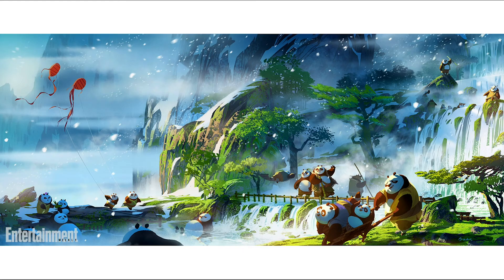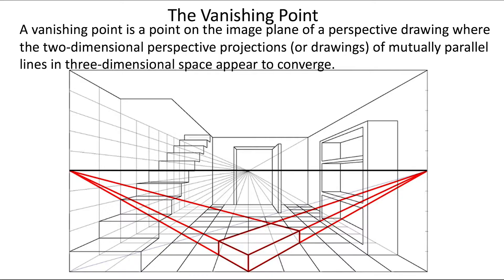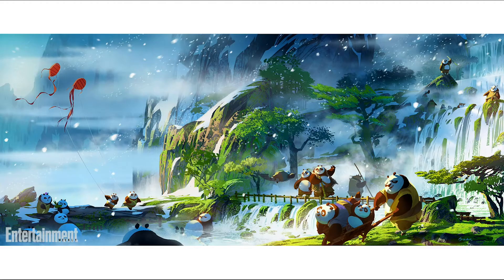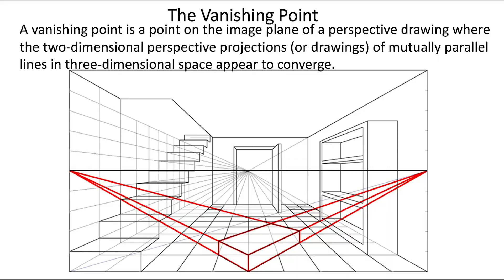Here's another example of background drawing and environment design — as you can see, it includes a lot of content. When doing environment design and background drawing, the most important part is the vanishing point. When you take a photo of the environment, everything has a vanishing point. The vanishing point depicts the space and scale relationships of objects in three-dimensional space. So when you start drawing, think about the vanishing point and use it to convey space and scale relationships.